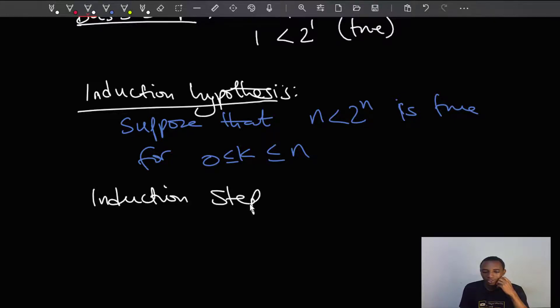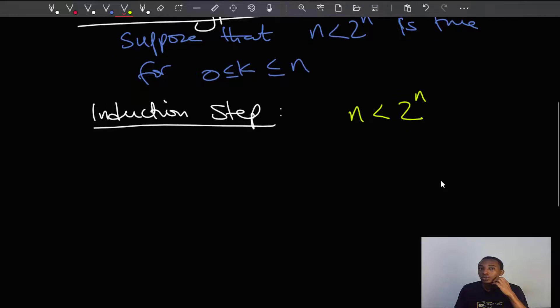So the induction step where we do the actual proof. So I'll rewrite this. We want to prove that n is less than 2 to the power n for all non-negative integers n. So from this, you can already see, I'll just write that here, n is less than 2 to the power n.